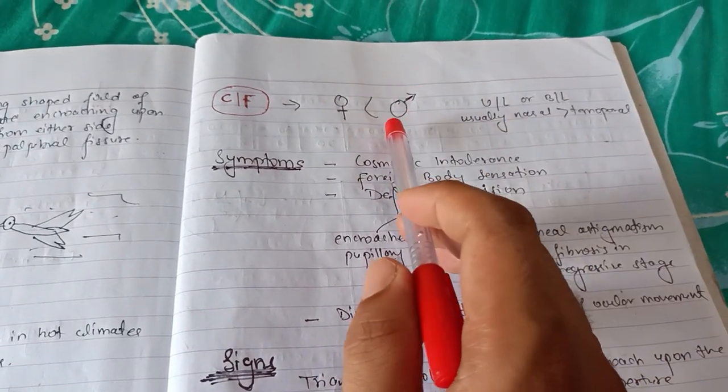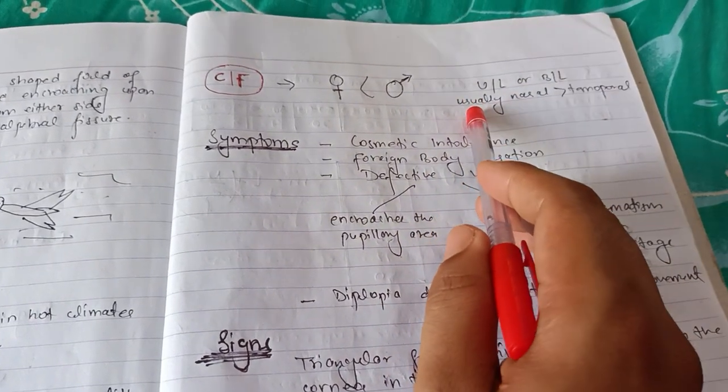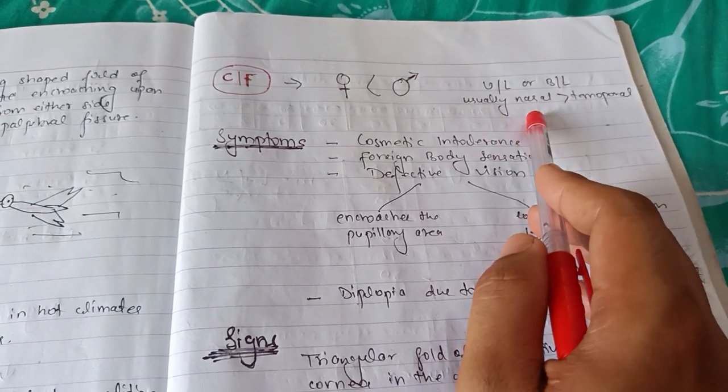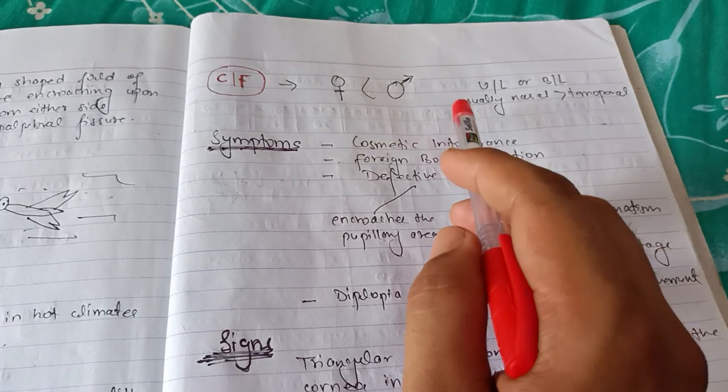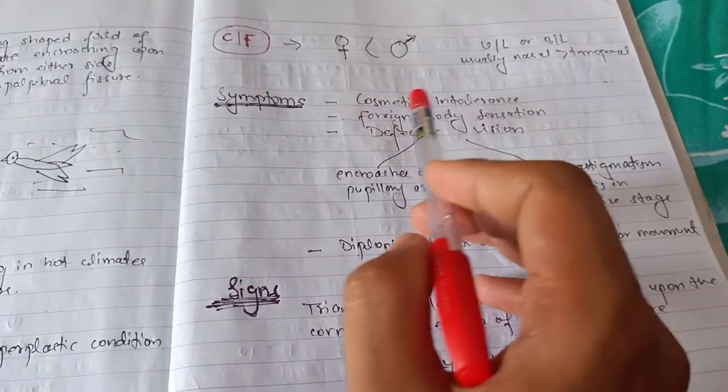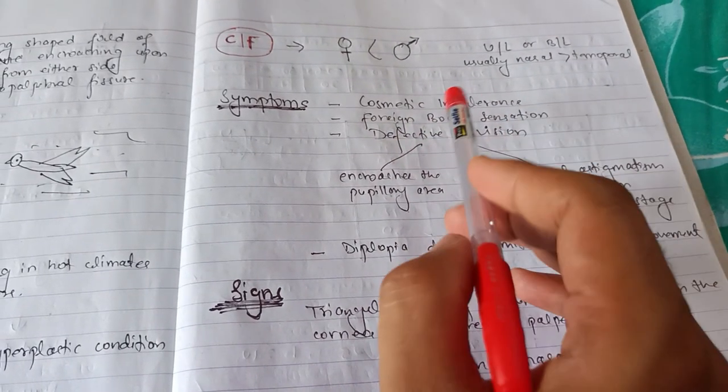Talking about its clinical features, it is more common in males rather than females because males have more outdoor activities. It can be unilateral or bilateral, usually on the nasal side then temporal side. It is a wing-shaped fold of conjunctiva encroaching upon the cornea.